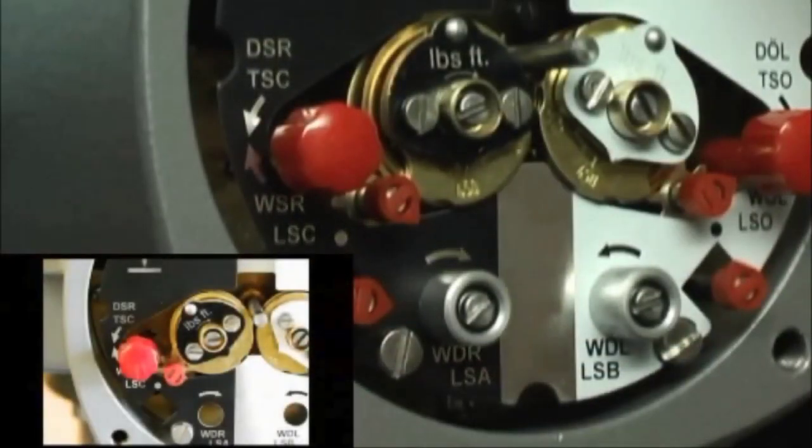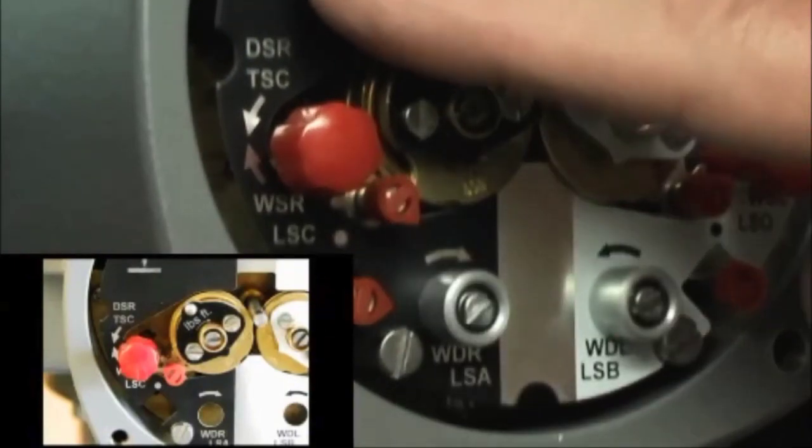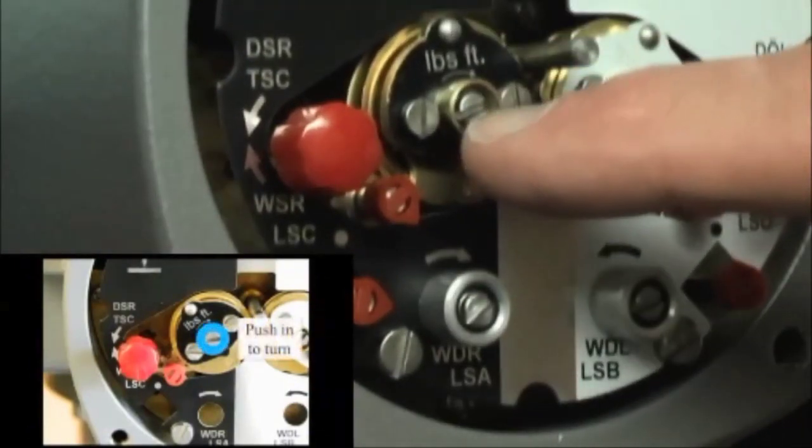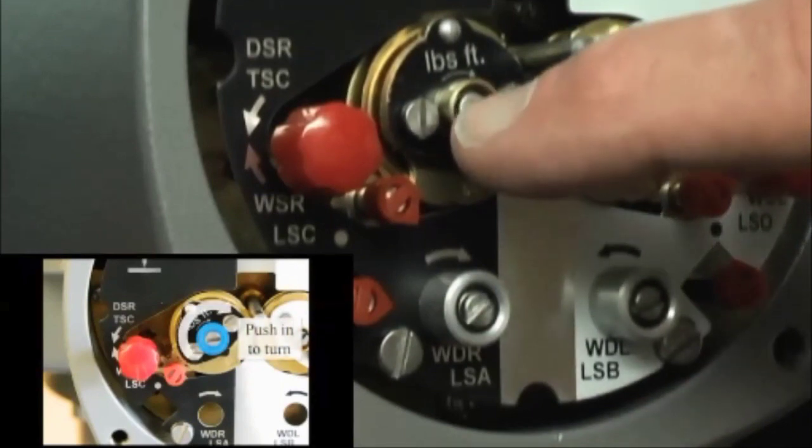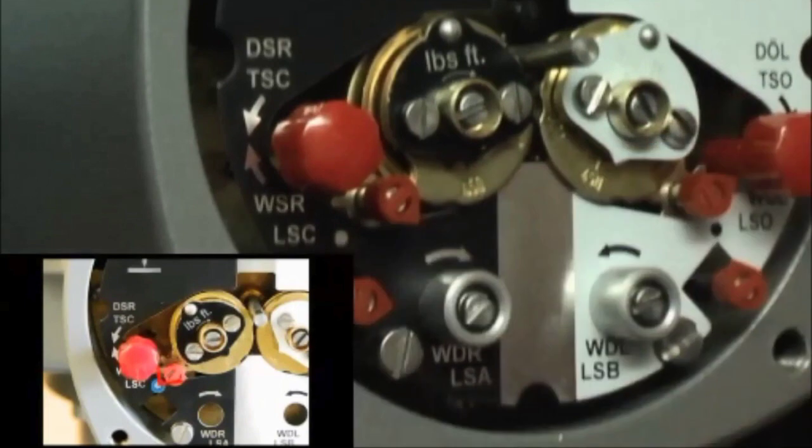We're going to set the closed limit switch on our actuator, and I'm going to do it on the black side or the closed side. I'm going to use the adjusting screw in the center of the torque dial and bring my pointer over till it points in the direction of the trip mark.